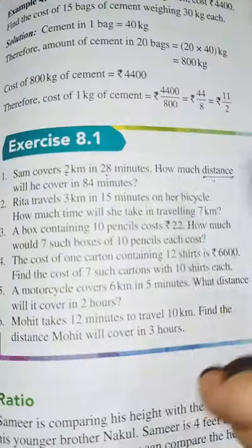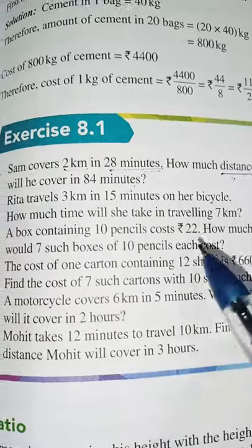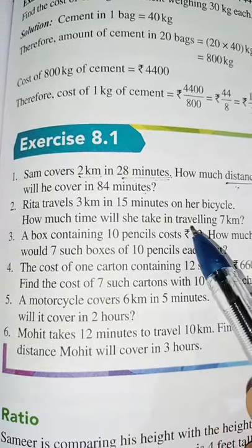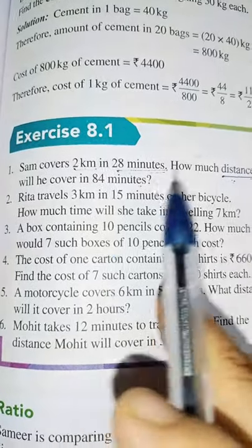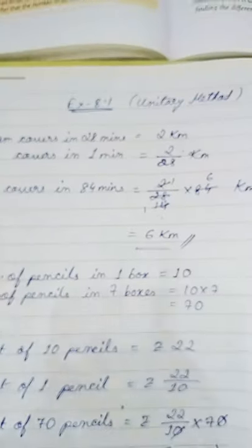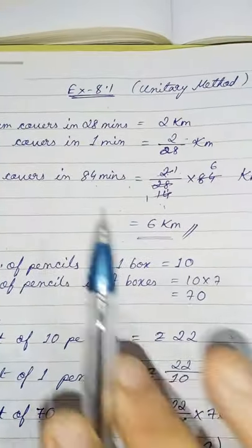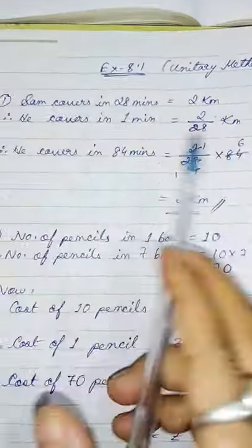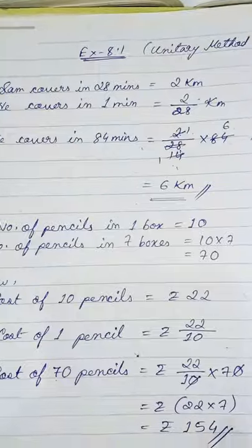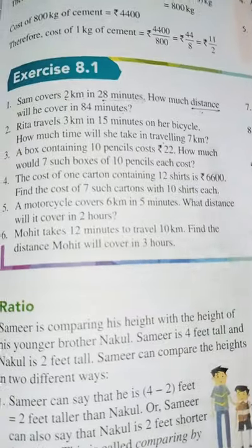Question number 2 is the same — kilometre is given, time is given, you have to find out. But in question 2, we have to find out the time. So in this case, the time will be written on the right hand side and the distance on the left hand side. The procedure will be the same, just the statement will change. In question number 3, you will get a different type of question — a new type starting from question number 3.